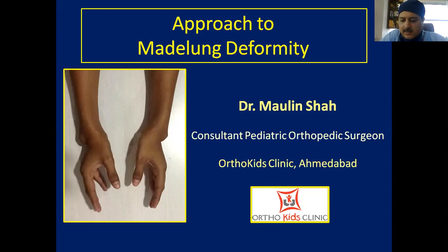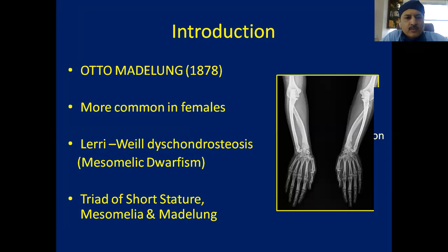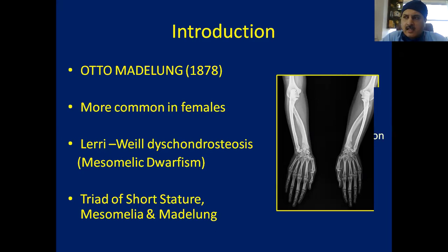Otto Madelung is the person who coined this term in 1878 — he found this deformity for the first time. We know it is more common in females and it's a kind of mesomalic dwarfism. Mesomelia means the forearm and the leg parts are short. It is part of Leri-Weill dyschondrosteosis, a skeletal dysplasia.